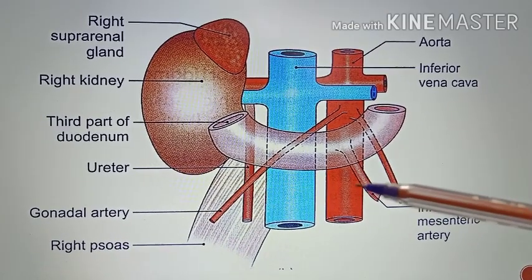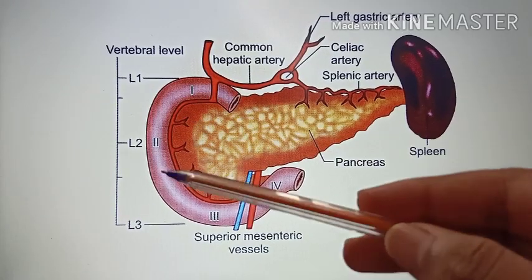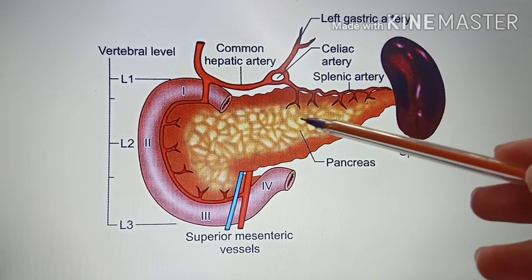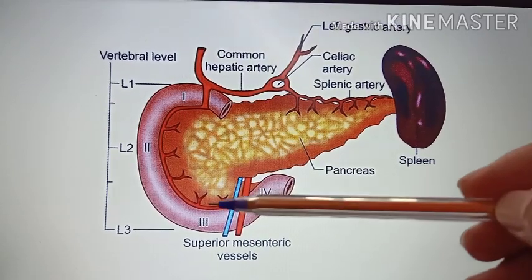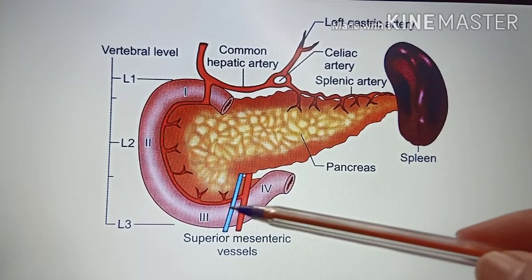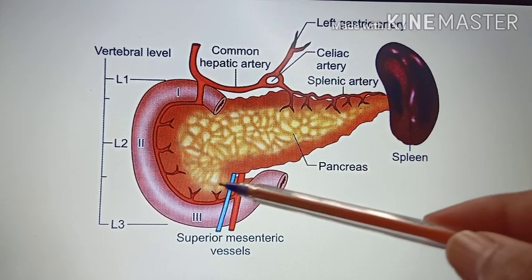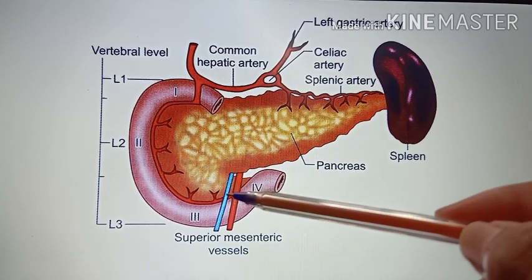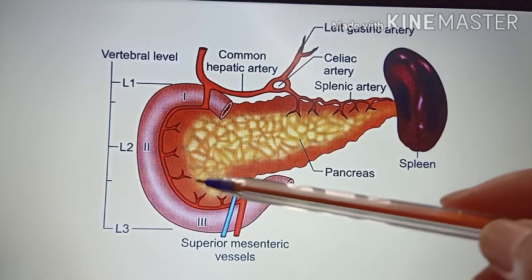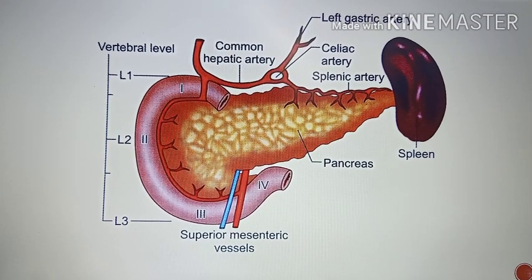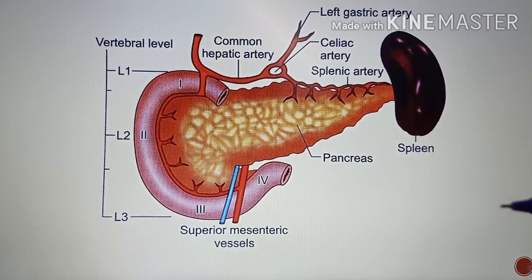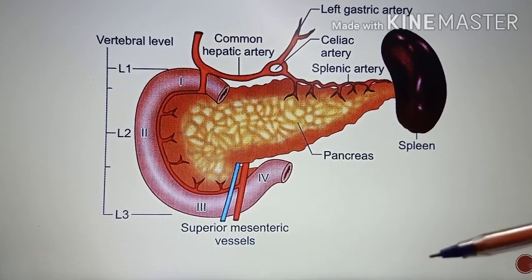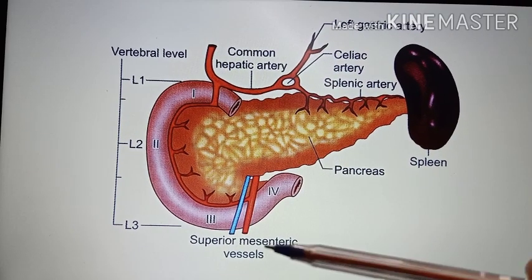In this picture you can see the C-shaped duodenum, the third part, and the pancreas. Coming to the superior relation — superior to the third part of the duodenum, you have the head of the pancreas with the uncinate process, and also the inferior pancreaticoduodenal vessels. For the inferior relation, there is the presence of coils of jejunum, which are not visible in this picture.